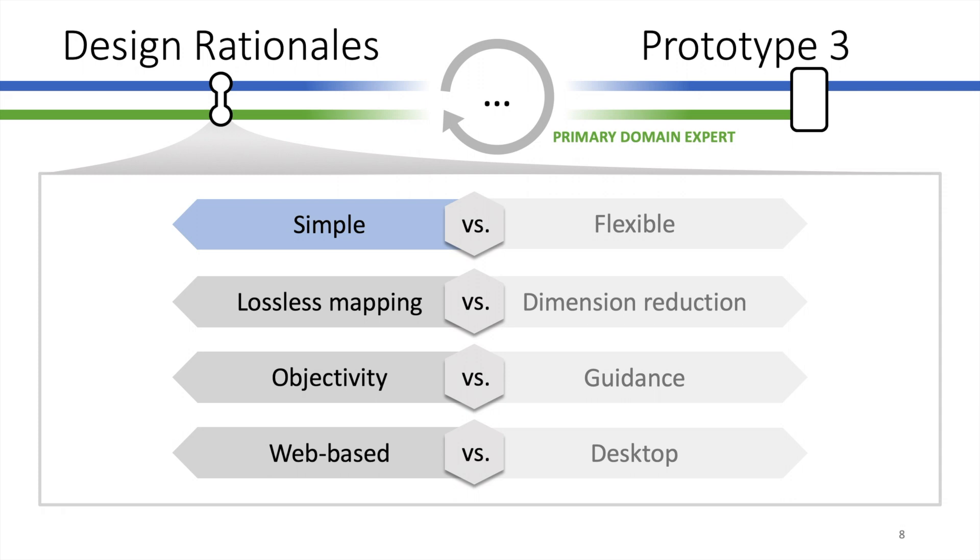For the visual encoding, we prefer a lossless mapping of design options, because it enables motor designers to visually retrieve any criterion value from any design option at any time.